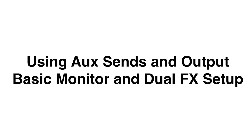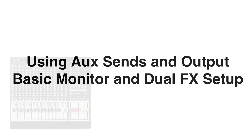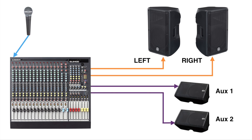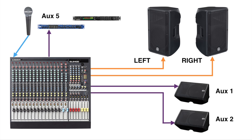Now let's use auxiliary sends and outputs with a basic monitor setup and add some effects. Here is our mixer again, our main speakers, auxiliary one and two for our floor monitors. We're going to add a reverb unit and a delay unit. On our channel strip, we're going to send a signal using auxiliary five, which will connect to the input of the reverb unit and is also sent back in. Auxiliary six is sent to the delay unit and is also sent back in.